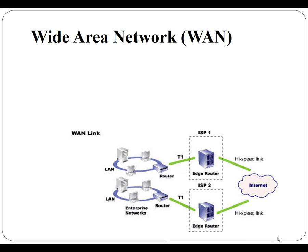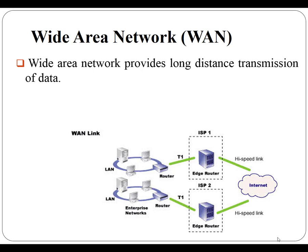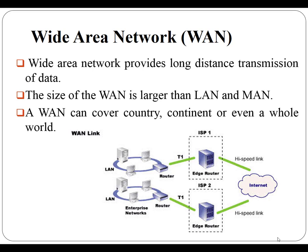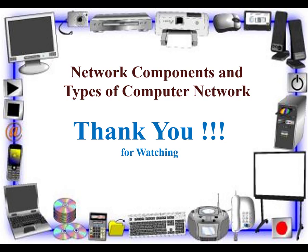A MAN covers the larger area of a city or town. The next type of computer network is wide area network, also termed as WAN. Wide area network provides long distance transmission of data. The size of WAN is larger than LAN and MAN; a WAN can cover a country, continent, or even the whole world. Internet connection is an example of WAN. Other examples of WAN are mobile broadband connections such as 3G or 4G. This is all about network components and types of computer network. Thanks for watching.